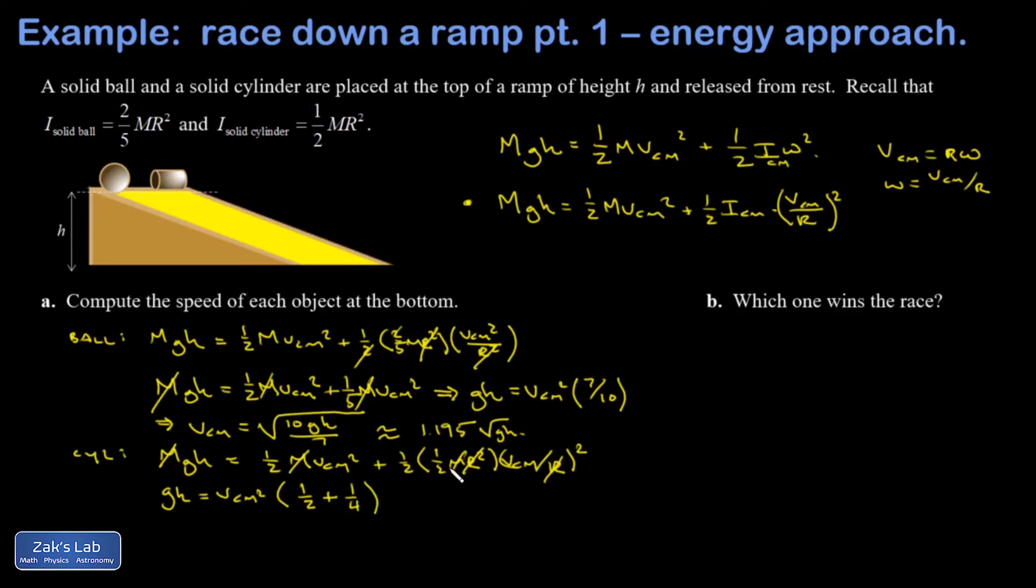A half plus a fourth, that's three fourths. I'm going to multiply both sides by four thirds and I get square root four GH over three. If I pull out a square root of four over three, I can get an approximation which is handy for comparison: 1.155 root GH.